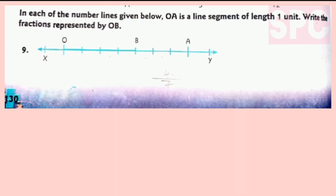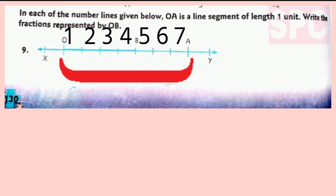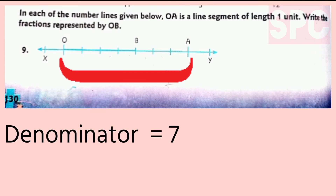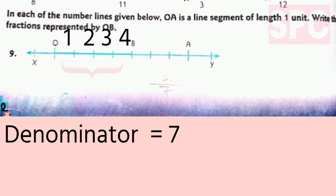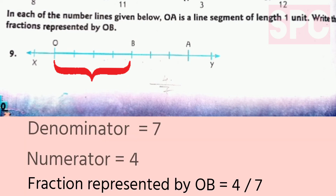So, let us start with question number 9. Here you can see O and A are marked on this line segment XY. Let us find out in how many parts OA is divided: 1, 2, 3, 4, 5, 6, 7. OA is divided into 7 equal parts, so 7 will be our denominator. Now how many parts are falling under OB? Let us count: 1, 2, 3, 4. Out of 7 parts, OB is represented by 4 parts. Therefore, the fraction represented by OB will be 4 by 7.